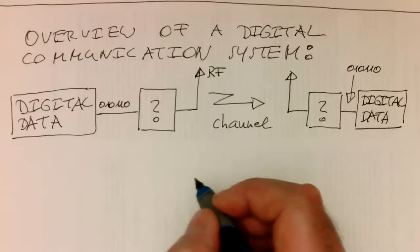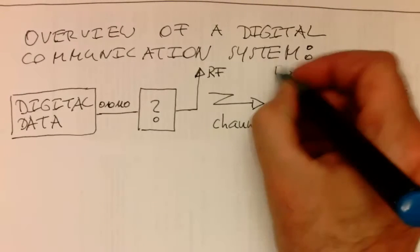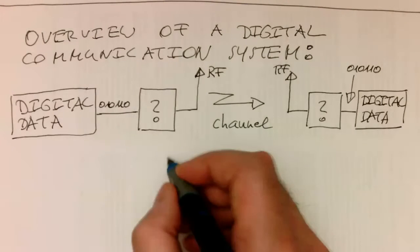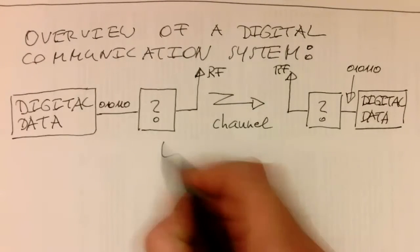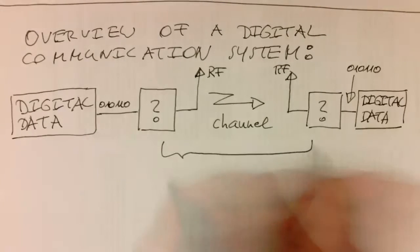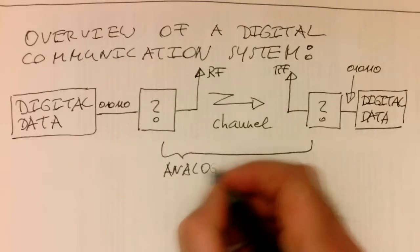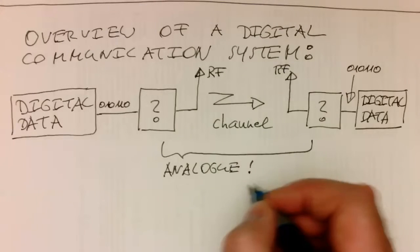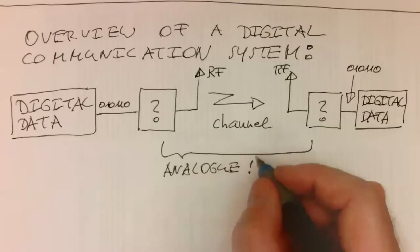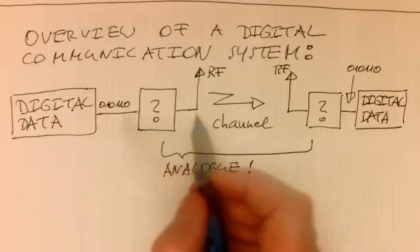But important now is the following here. So this is a band limited or band pass, band pass filter channel here. And so this whole area here is analog. So this means we have some kind of, this box needs to do some kind of digital to analog transformation here.